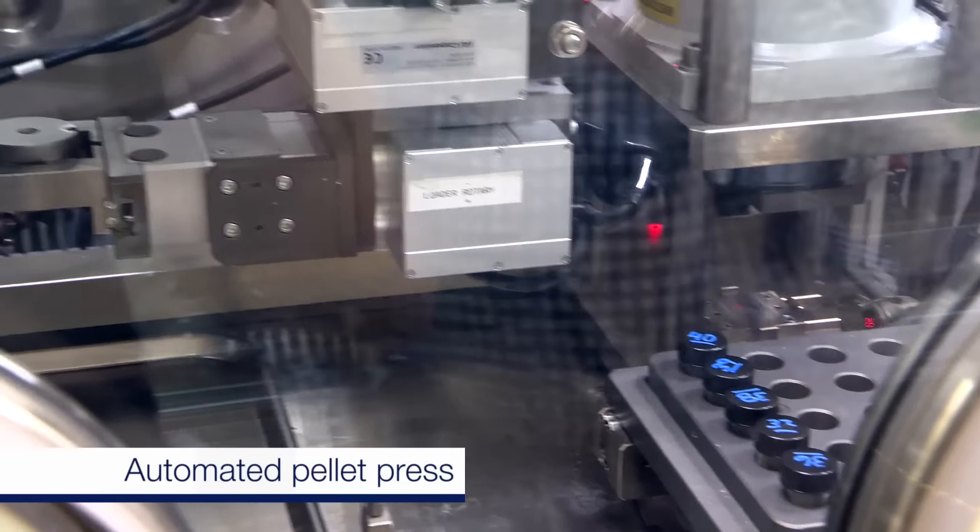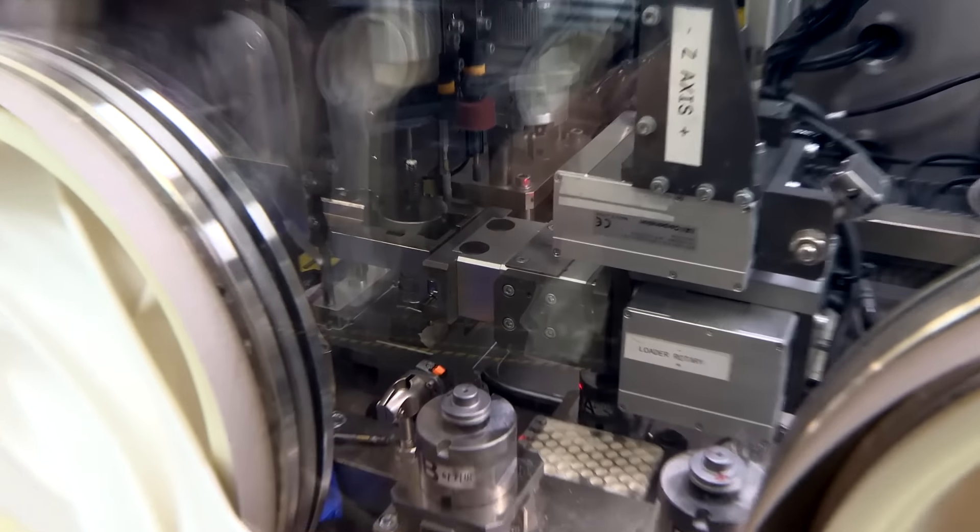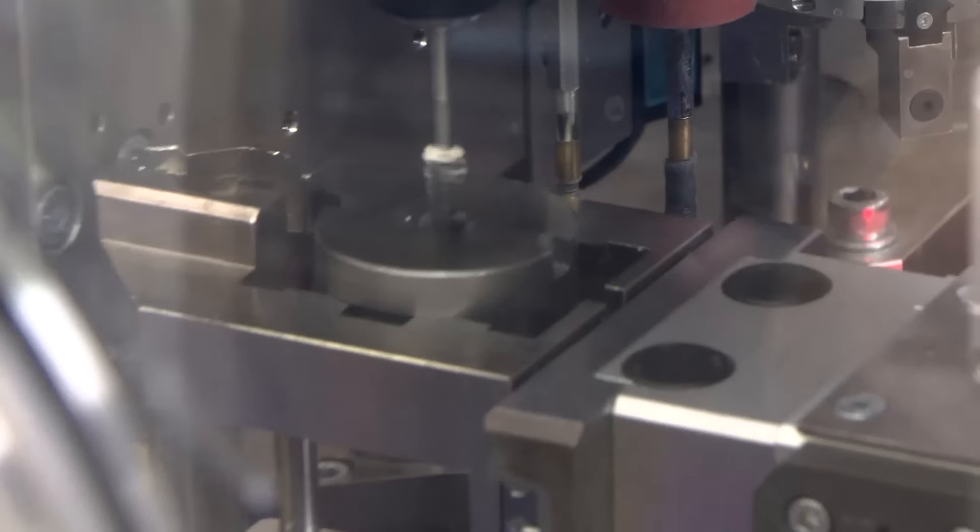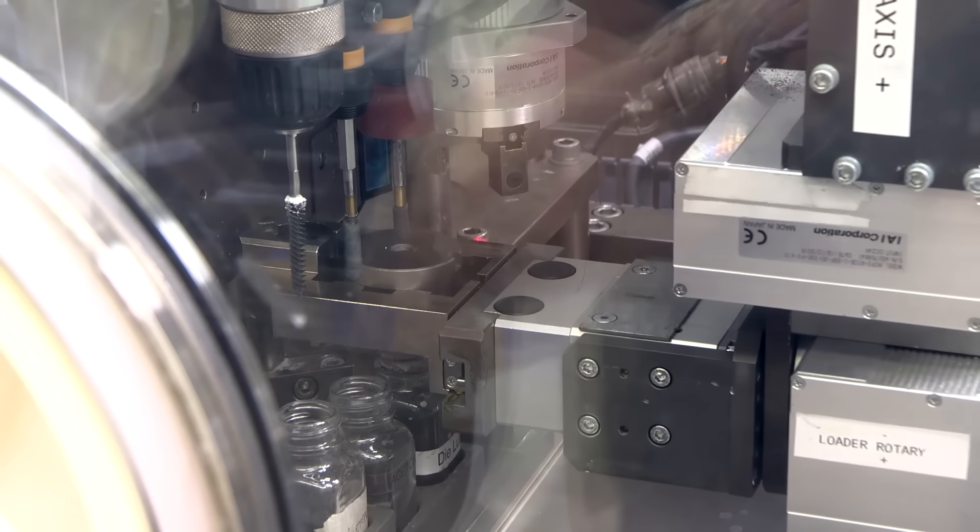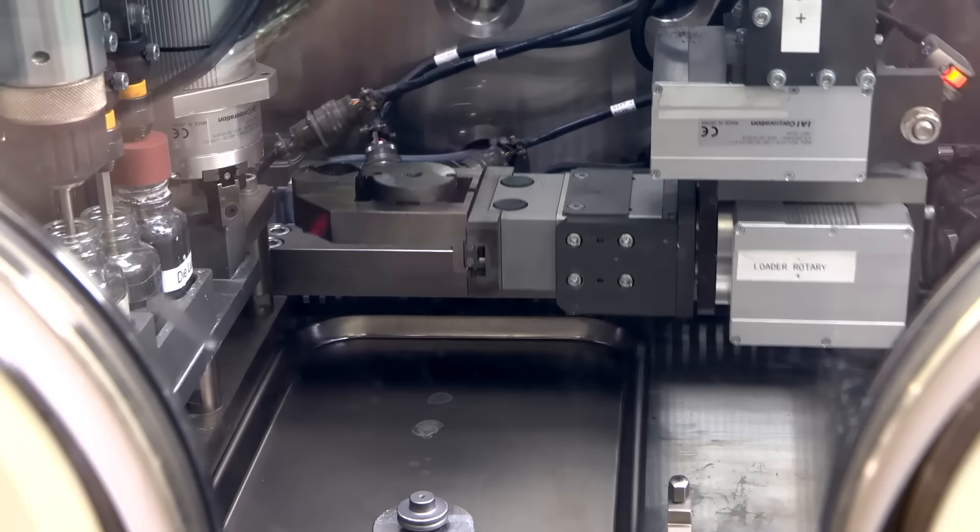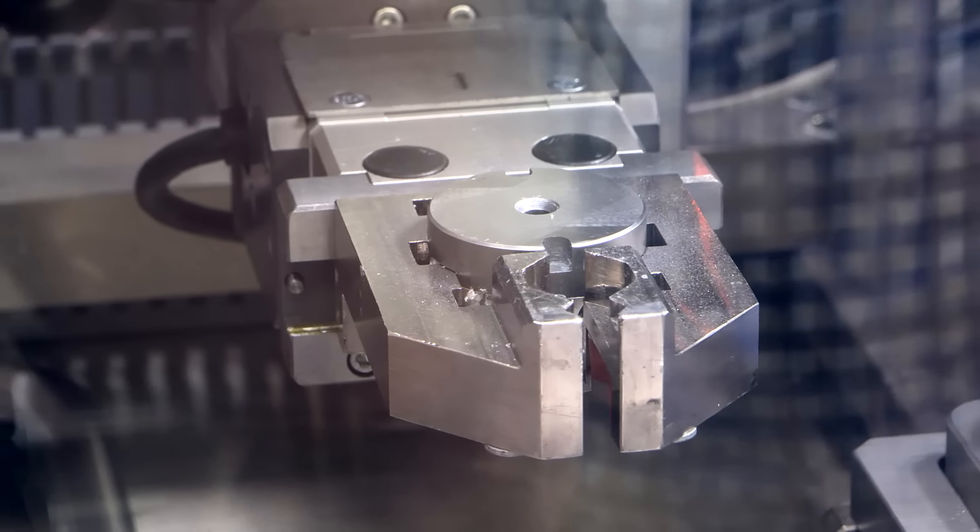This is the automated pellet press right here. It's going to first clean this die out. It has to be really, really clean before we use it. Now it gets a little bit of lubricant, and it'll come over and it'll sit in the center of the glove box waiting for that solution to dry. So it's just going to sit there for about 45 seconds or so.